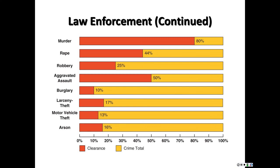Overall crime is down, but certain crime rates increase. The top four crimes — murder, rape, robbery, and aggravated assault — have the highest clearance rates because they are crimes against people and are all felonies. Crimes like burglary, larceny, motor vehicle theft, and arson are generally crimes against property; while considered important, human resources are focused primarily on crimes against persons.